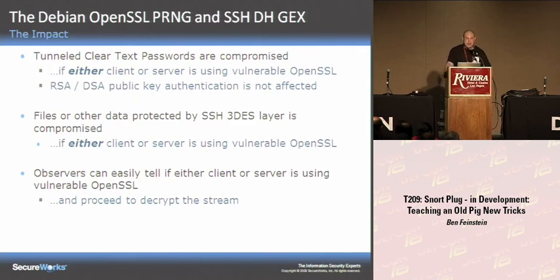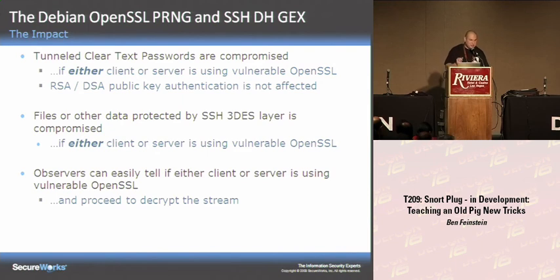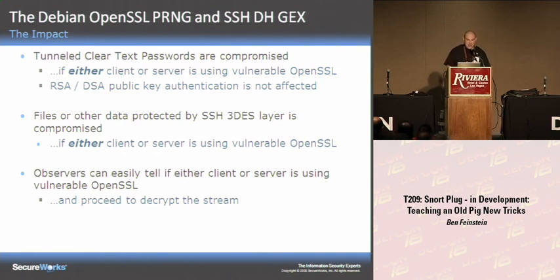Some interesting implications: if I can break the triple-DES encryption, I've got your username and password in the clear if you're using tunneled clear-text passwords. If you're using RSA or DSA public key auth, I can't get your credentials — even if I crack the Diffie-Hellman key exchange, I can't break public-key authentication. But I can harvest clear-text passwords all day long if you're using this bad Debian OpenSSL. You can also grab files or any other data in the session being transferred, and observers can relatively easily tell if one or both servers is vulnerable.